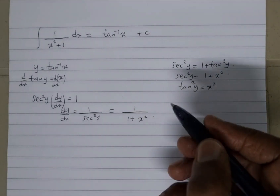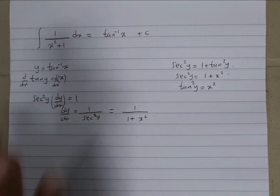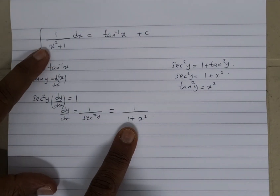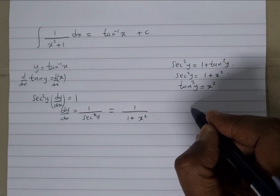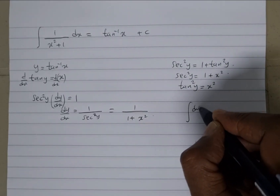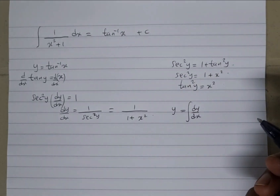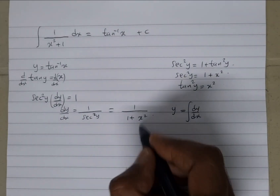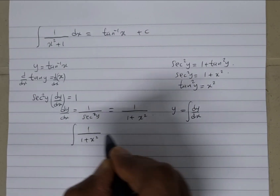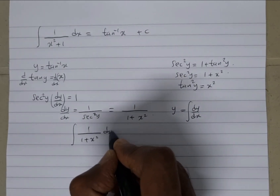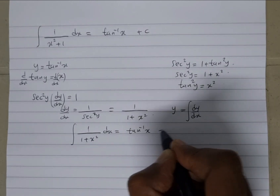So this sec squared y can be substituted for 1 over 1 plus x squared. And as you can see, we've reached the result — that's the reverse of differentiation. This is exactly the same. Therefore, if we were to integrate this, the integral of 1 over 1 plus x squared dx is going to be equal to tan inverse of x plus c.